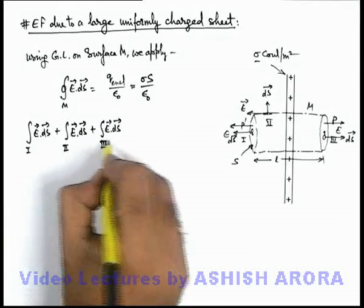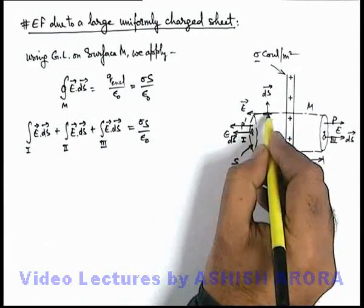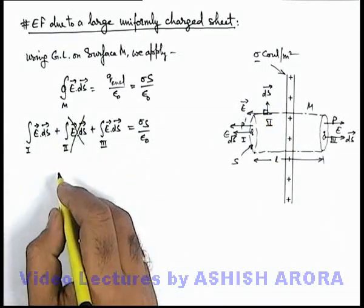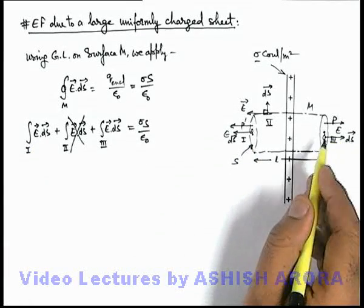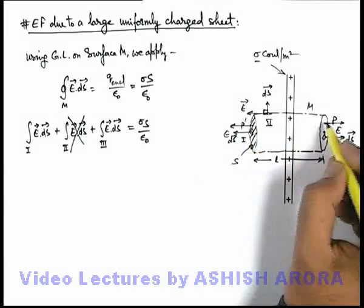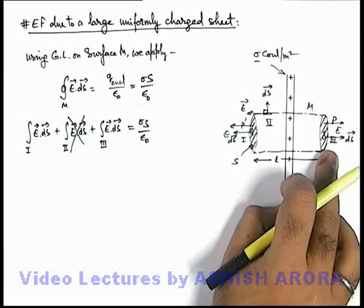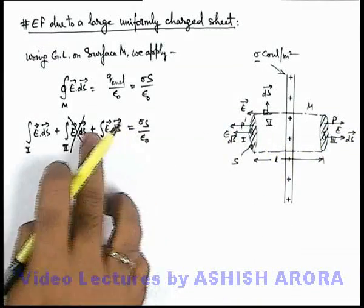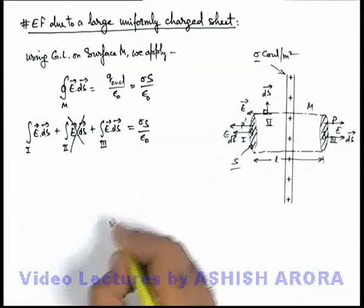And here you can see that for the second part E and dS are perpendicular, so this integral will vanish and the only parameter left will be the first and third integral. And by symmetry we can see at every point of this surface S on both of these sections 1 and 3, the electric field will be uniform. So this E can be taken out of the integral and integration of dS can be written as total area S.